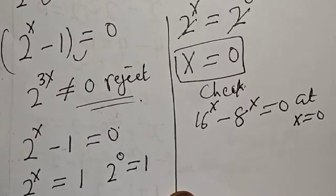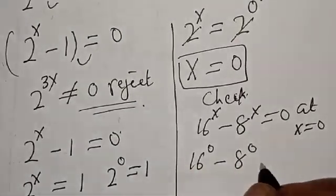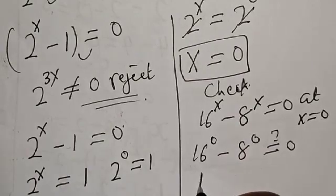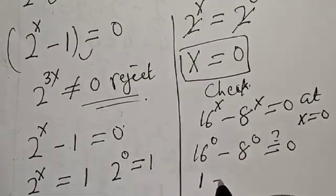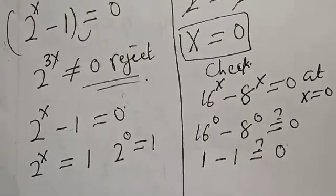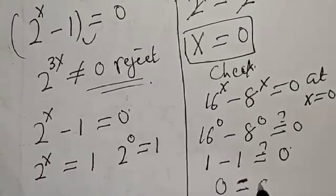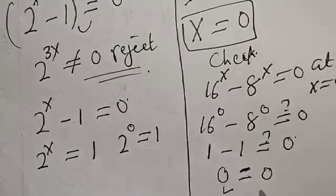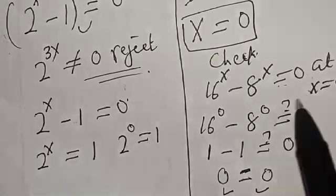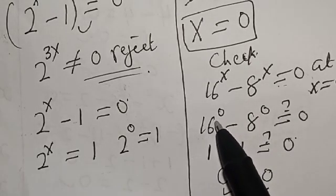Then we have 16 raised to power 0 minus 8 raised to power 0, which must equal 0. Since anything raised to power 0 is 1, this becomes 1 minus 1, which equals 0. The left hand side equals the right hand side, which satisfies the given equation at x equals 0. If you enjoyed the class, please don't forget to like, share, comment, and subscribe. Thank you.